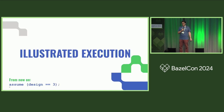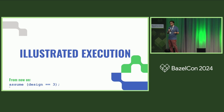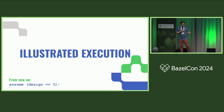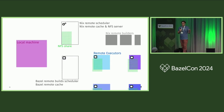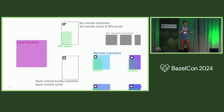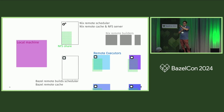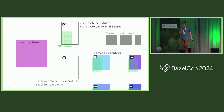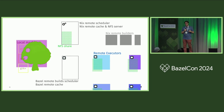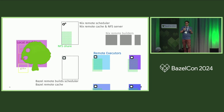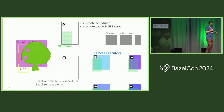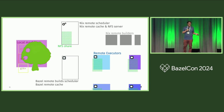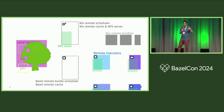Let me walk through how it works. We start in a cluster with three different parts: the local machine, a remote Nix server with remote Nix builders, and the remote Bazel server with the cache, scheduler, and remote executors. When you start with your local tree, it is impure because it depends on things from the system — but not that impure, because those system dependencies are Nix packages, which are pure by Nix, not through Bazel.